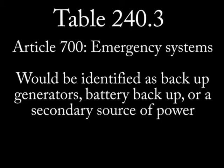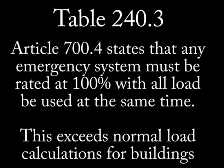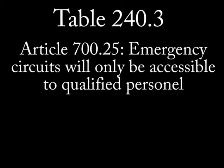Next, we look at emergency systems covered in article 700. I only found two items related to overcurrent protection in this section. First is article 700.4, which means that emergency systems will be rated at 100% so that all loads can be operated at the same time. In most cases, this would mean that the emergency system would exceed the capacity of the original service. Article 700.25 means that the overcurrent devices in the emergency circuits will be accessible to authorized persons only.